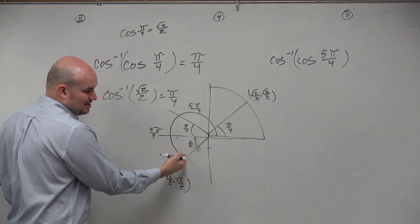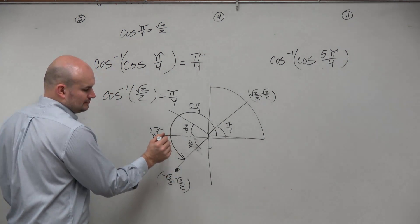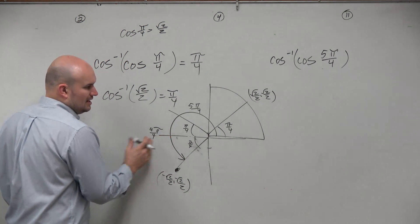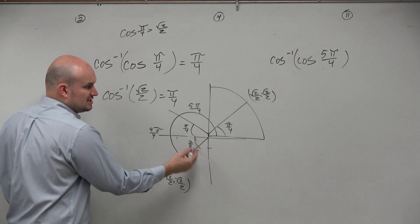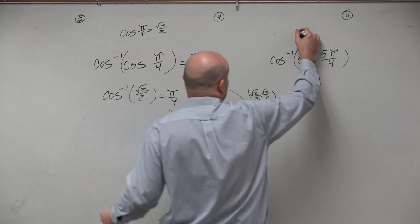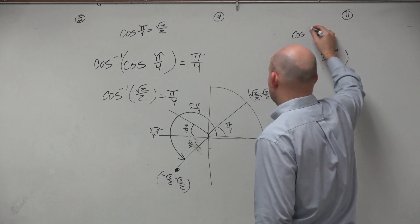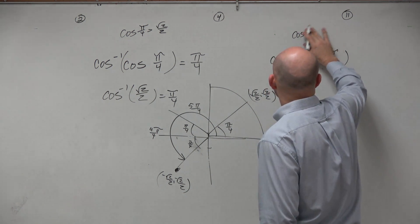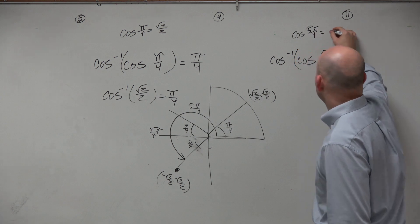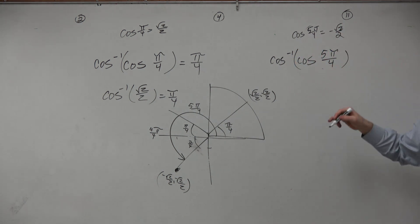And again, this works using these reference angles. So therefore, the cosine of 5 pi over 4 is equal to negative square root of 2 over 2. Do you guys agree?